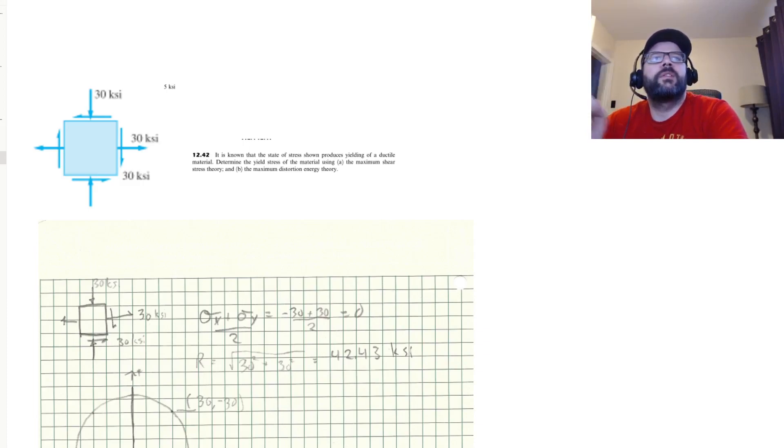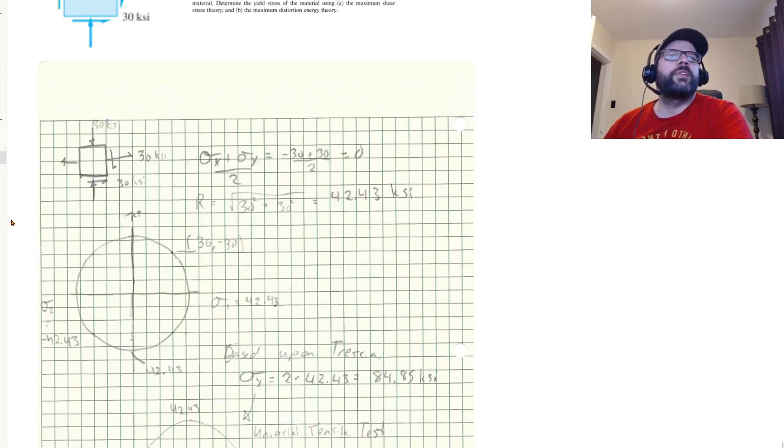So we've got this cube here representing some sort of stress state, and this is a stress state that causes this thing to yield. So we want to determine the yield strength of the material if we're using either the maximum shear stress theory or the maximum distortion energy theory. So basically start off with our cube here.